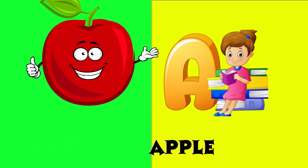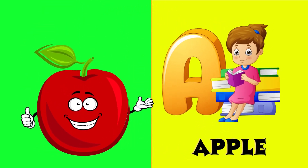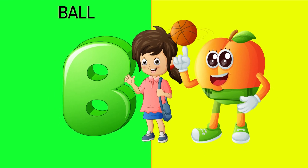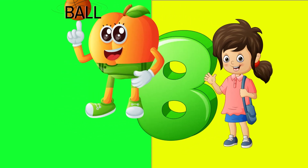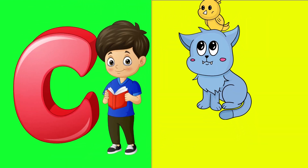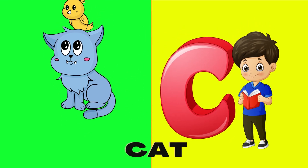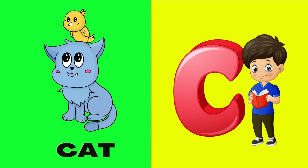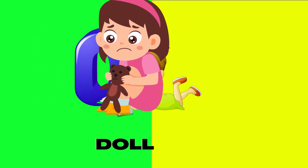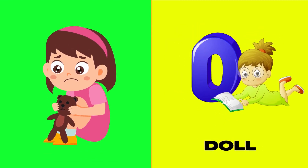A is for apple, a-a-apple. B is for ball, b-b-ball. C is for cat, c-c-cat. D is for doll, d-d-doll.